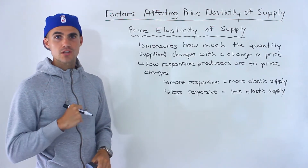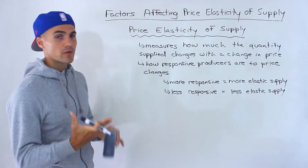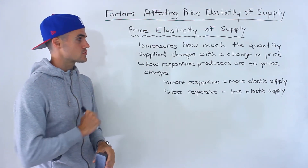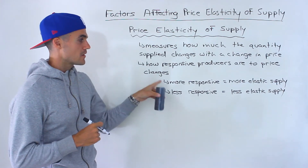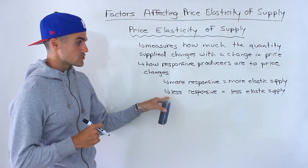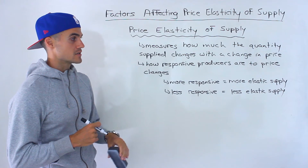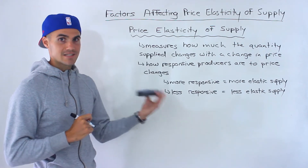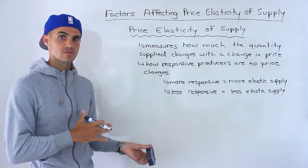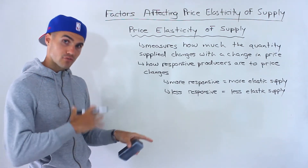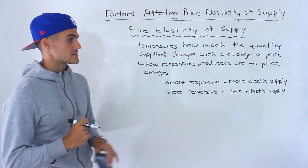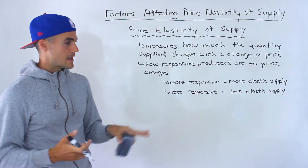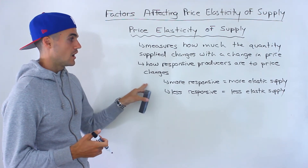Before getting into the actual factors, I want to do a quick review of the price elasticity of supply, which we covered in a previous video. It basically measures how much the quantity supplied changes with a change in price, or how responsive producers are to price changes. The more responsive they are, the more elastic that supply is going to be. The less responsive they are, the more inelastic. A more casual way to look at this is how easy it is for producers to produce that product — the easier it is, the more elastic the supply.